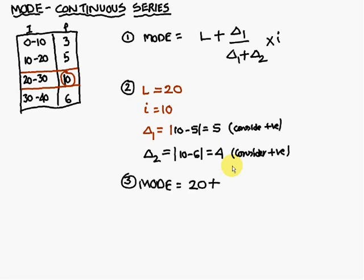Now apply the formula. Mode = L + (Δ₁/(Δ₁+Δ₂)) × I. L = 20, Δ₁ = 5, Δ₂ = 4, I = 10. So Mode = 20 + 5/(5+4) × 10, which equals approximately 25.56. This is the mode of the continuous series.